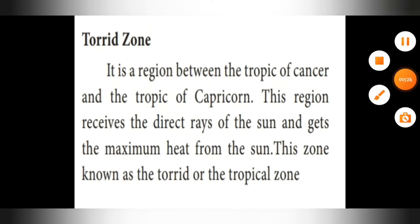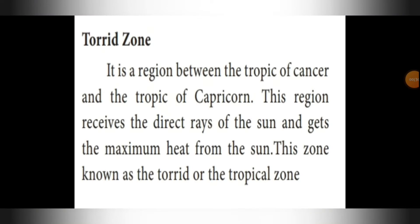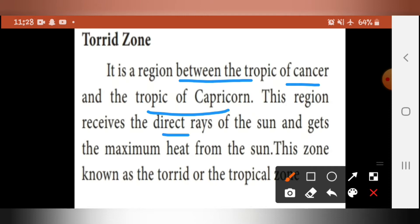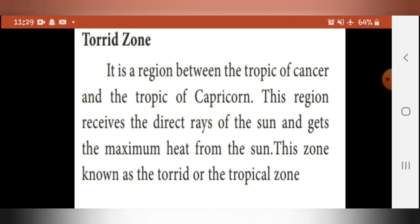Coming to the torrid zone first. It is a region between the Tropic of Cancer and the Tropic of Capricorn. This region receives the direct rays of the sun and gets the maximum heat from the sun. This zone is known as the torrid or tropical zone. Let's see the picture for more clarification.